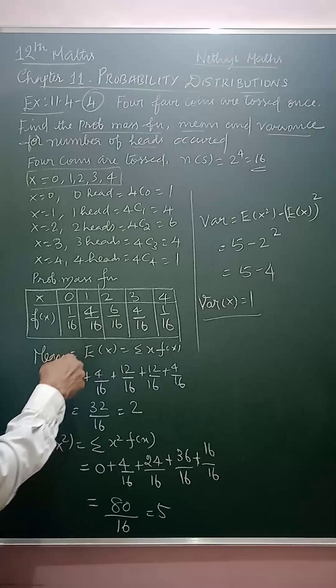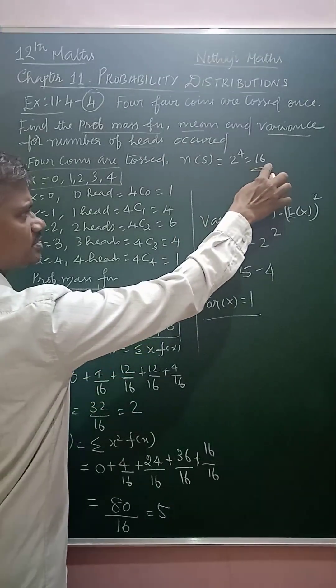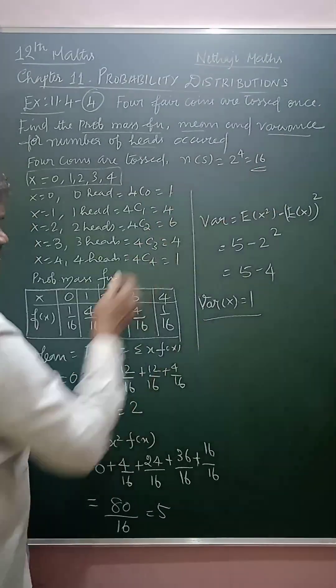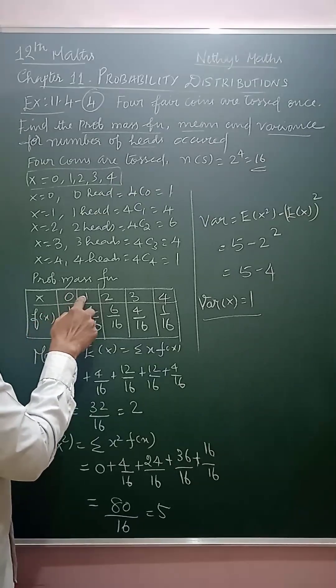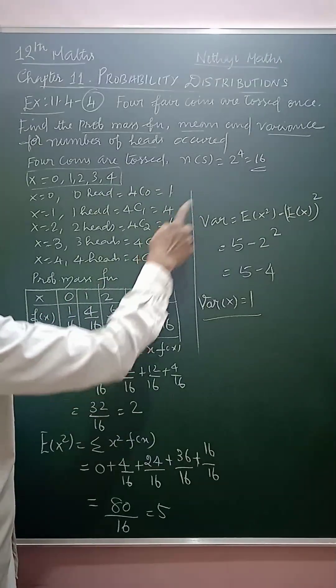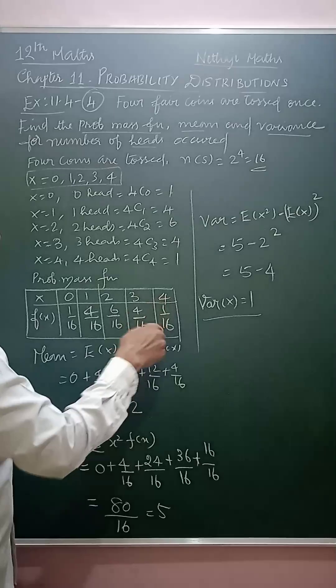So, the probability mass function, total number of sample space is 16. So, 1 by 16, that is the probability for x equal to 0. The probability for x is equal to 1 means 4 by 16, 6 by 16, 4 by 16, again 1 by 16.